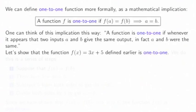Let's show that the function f(x) = 3x + 5 defined earlier is one-to-one. We do this in a series of steps.